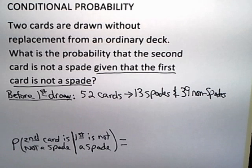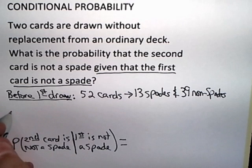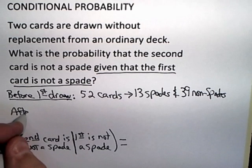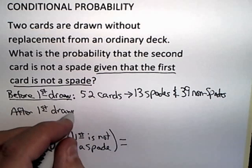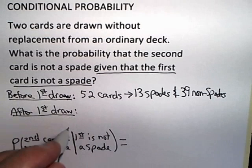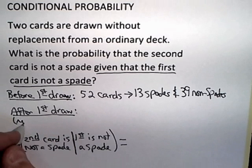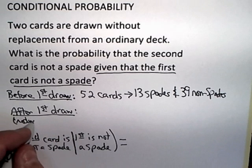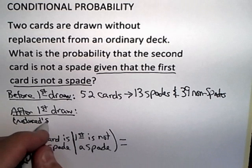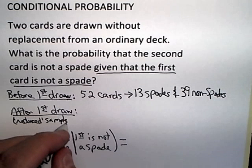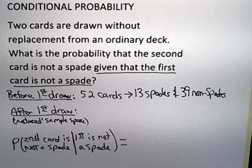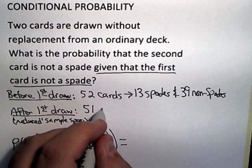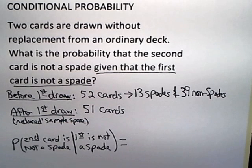Now the condition reduces the sample space. So after the first draw, we get a reduced sample space, what I call reduced sample space. We drew one card and we didn't replace it. So we only have 51 cards remaining after the first draw.